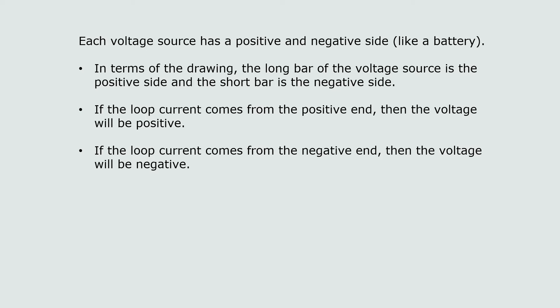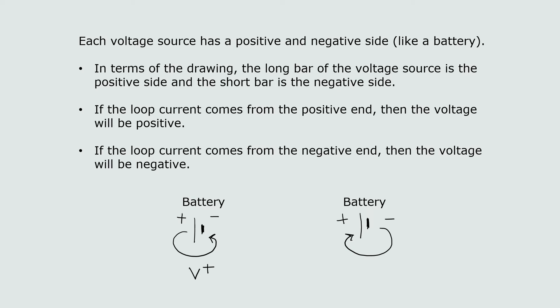So let's see how this actually looks. We have a battery drawn with a long edge and a short edge. In the first example, the loop current is coming from the long side — the positive side — so the voltage is going to be positive. Alternatively, if the loop current is coming from the short end, the negative side, then the voltage is going to be negative. You will need to know this when looking at the picture to set up a matrix equation.